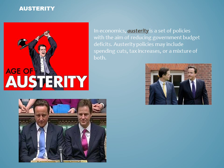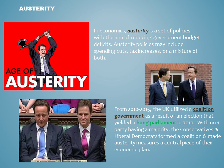Since the onset of the global financial crisis in 2008, it has been nearly impossible to talk about British politics without discussing the economic policy of austerity. In economics, austerity is a set of policies that a government may take to try to reduce its budget deficits, usually done through some combination of spending cuts and tax increases. After the 2010 UK elections, a hung parliament resulted in the formation of a coalition government between the Conservatives and the Liberal Democrats. This is a very rare occurrence and a phenomenon in British politics, as typically either the Conservatives or Labour have been able to get a majority of the seats in the House of Commons.